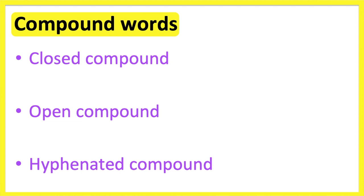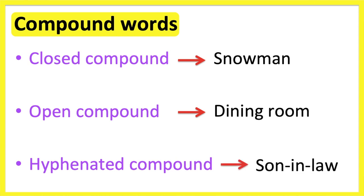A closed compound is when two smaller words are joined to make one word, for example, snowman. An open compound is when the smaller words are joined to form two separate words, for example, dining room. A hyphenated compound is when the smaller words are joined with a hyphen, for example, son-in-law. Now let's go through a list of common compound words.